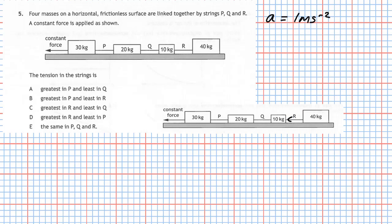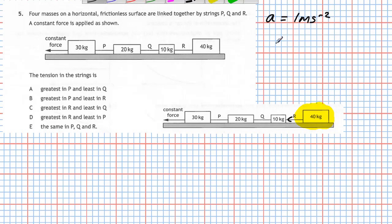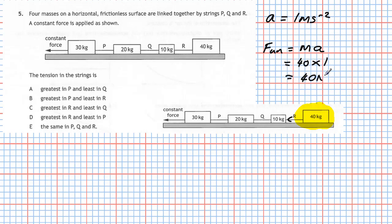Choosing an acceleration of 1 m/s² for simplicity, we first isolate the 40 kg box to find the tension in string R. Using F = ma: tension in R equals 40 kg × 1 m/s² = 40 newtons.